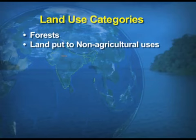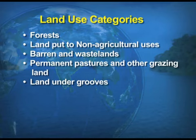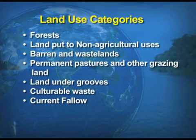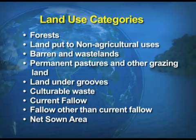The different land use categories are: forests, land put to non-agricultural uses, barren and wastelands, permanent pastures and other grazing land, land under groves, culturable wasteland, current fallow, fallow other than current fallow, and net area sown. We will be taking up all these categories one by one.